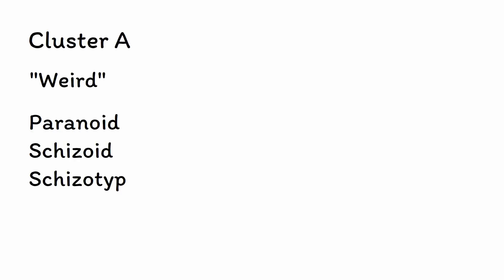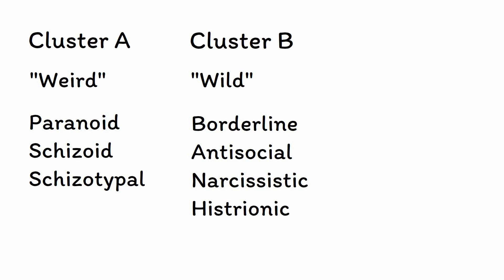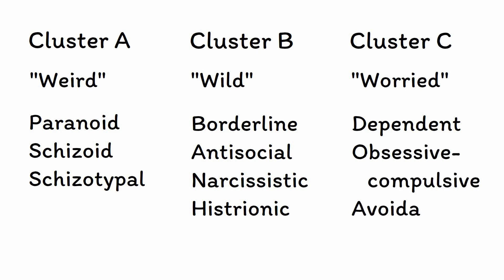Nevertheless, the DSM remains the most common way of categorizing mental pathology in the United States, so it's still important to understand how it attempts to characterize and describe personality pathology. Traditionally, the DSM categorized personality disorders into three distinct groups: Cluster A, the weird cluster of paranoid, schizoid, and schizotypal personality disorders; Cluster B, the wild cluster of borderline, antisocial, narcissistic, and histrionic personality disorders; and Cluster C, the worried cluster of dependent, obsessive-compulsive, and avoidant personality disorders.